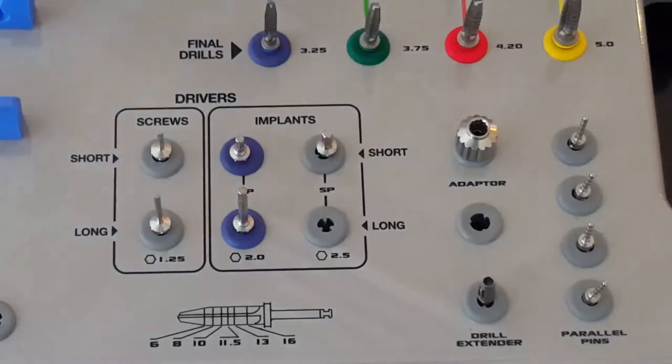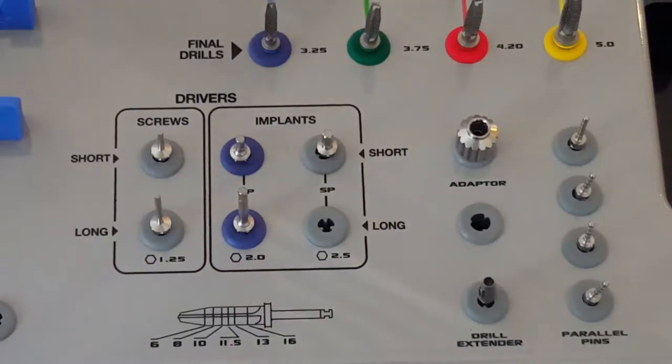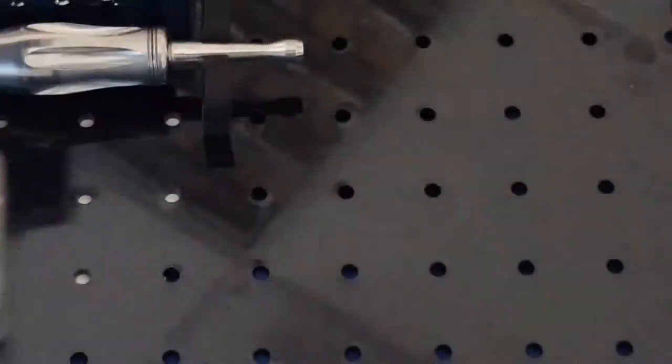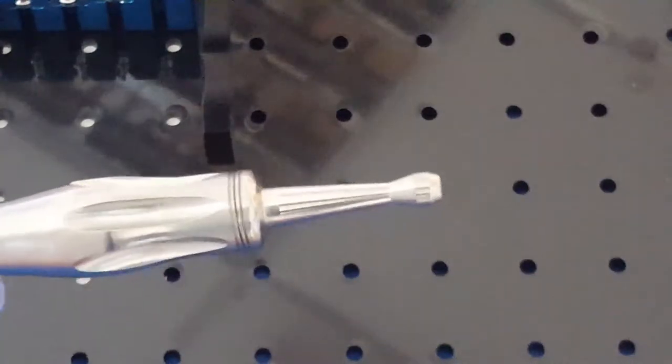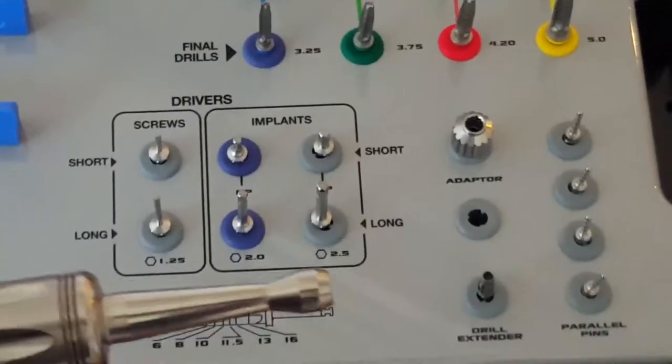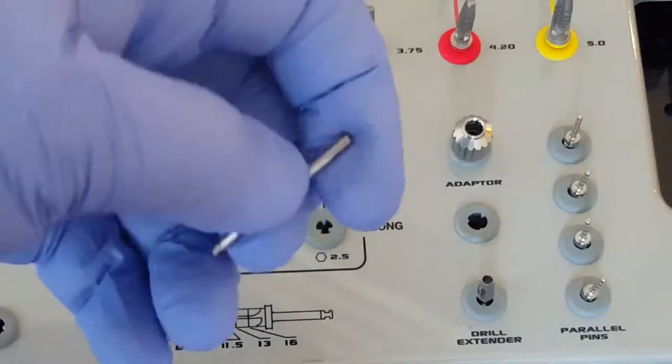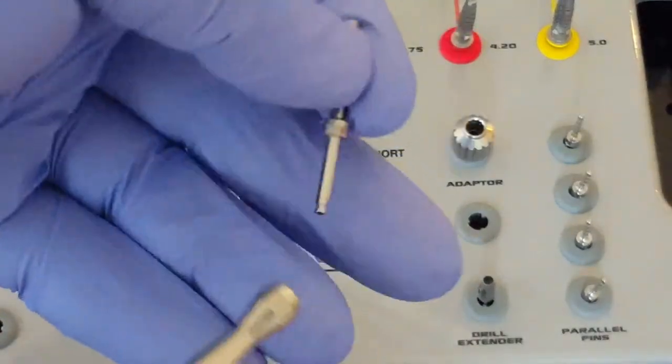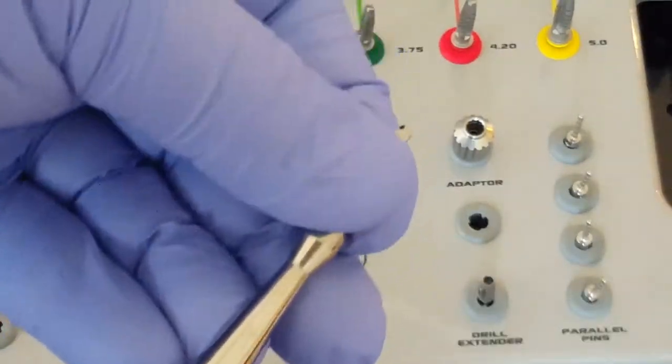We can also utilize one other device to insert the implant, and that's utilizing the hand driver, again, which is in the base of the tray. In the base of the tray we have our hand driver, and I can take the implant insertion key. I'm going to slide it into the driver.